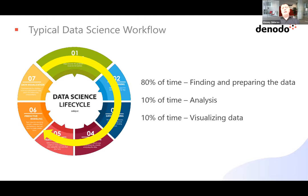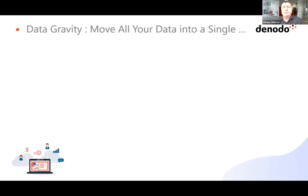Let me take a couple of steps back to understand how we traditionally provided data for data science and analytics. It's not a new approach — we've been doing it for decades. We've always been following the data gravity approach: the big data set should attract the smaller one, getting bigger and bigger. The whole idea of data management for analytical purposes was to bring data into a single something.